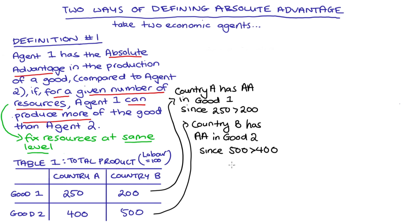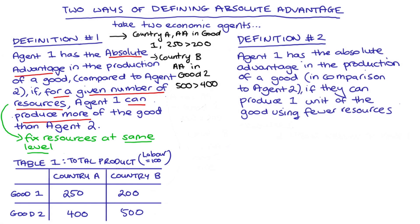We can drop this assumption, however. You might get something like definition two: agent one has an absolute advantage in the production of a good compared to agent two if they can produce one unit of that good using fewer resources. You do see definitions like this floating around — I'll link in the description references to different textbooks where you find different types of definitions.